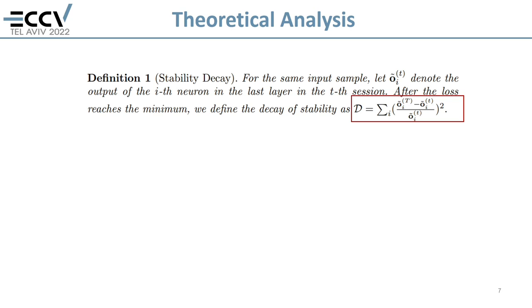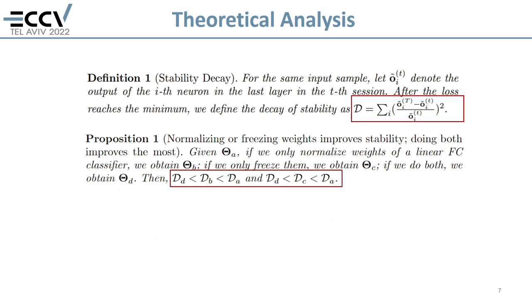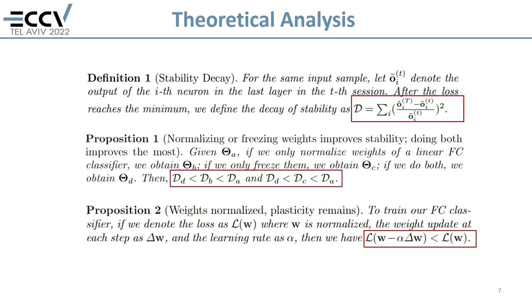We provide the theoretical analysis of our method for stability-plasticity. We define stability decay of the models, where lower stability decay means the model can better avoid catastrophic forgetting. We propose that the model adopting both freezing and normalizing the classifier weights is more stable than a model adopting either of those two operations alone, and the model which doesn't do any operations is the worst. Besides that, we also prove that our model remains plastic — that is, in the new session, the loss can be reduced as the parameters update.